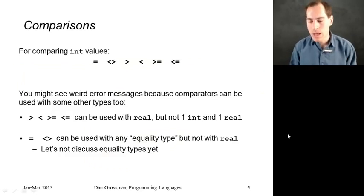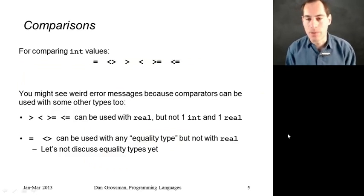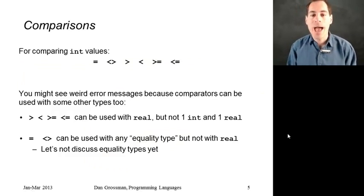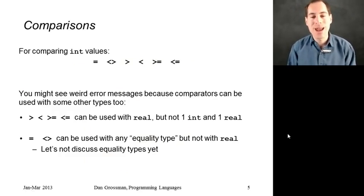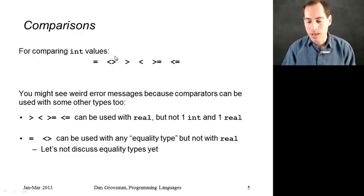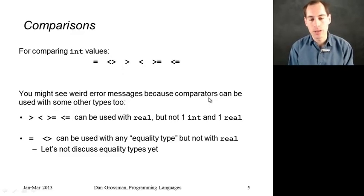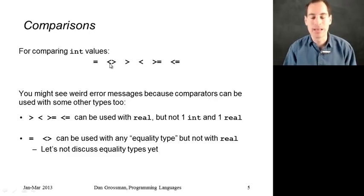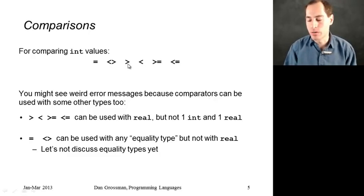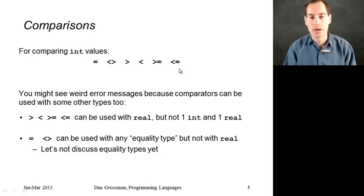Let's finish up with the comparison operators. If you have two ints, you can check if they're equal with =. You can check if they're not equal with the second operator — you might be used to != in most languages, but that's just not ML syntax. You can think of it as less-than-or-greater-than. The other comparison operators are more familiar: greater than, less than, greater than or equal to, less than or equal to.